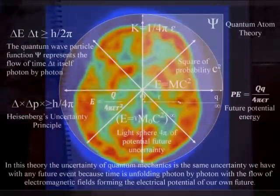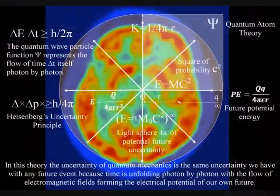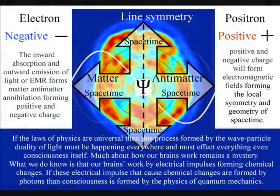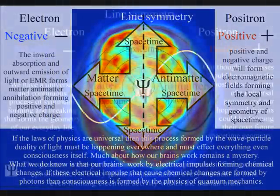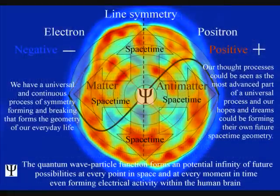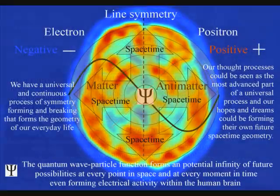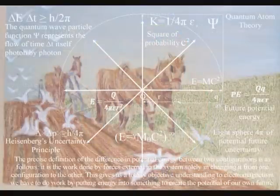Because the photon is also the carrier of the electromagnetic force, in this theory electrical activity in the brain is the most advanced part of this universal process. This gives us an objective understanding to electromagnetism. We have to do work by putting energy into something to create the electrical potential, and by doing so we create our own future within that reference frame.